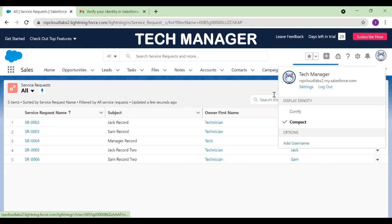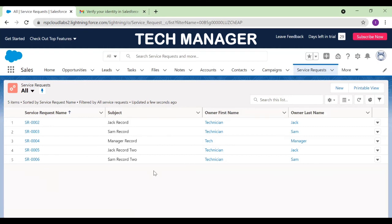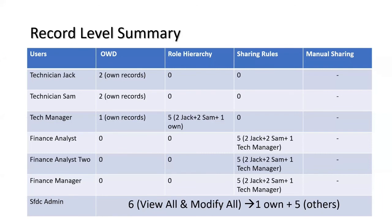Logged in as Tech Manager, still five records are visible — but these come from role hierarchy (two from Jack, two from Sam, one his own), not from the sharing rules. The sharing rule is not exposing any additional records to the Tech Manager. In conclusion, the Finance team — Finance Analyst, Finance Analyst 2, and Finance Manager — each gained five additional records via sharing rules, while the Tech team members received no additional access.